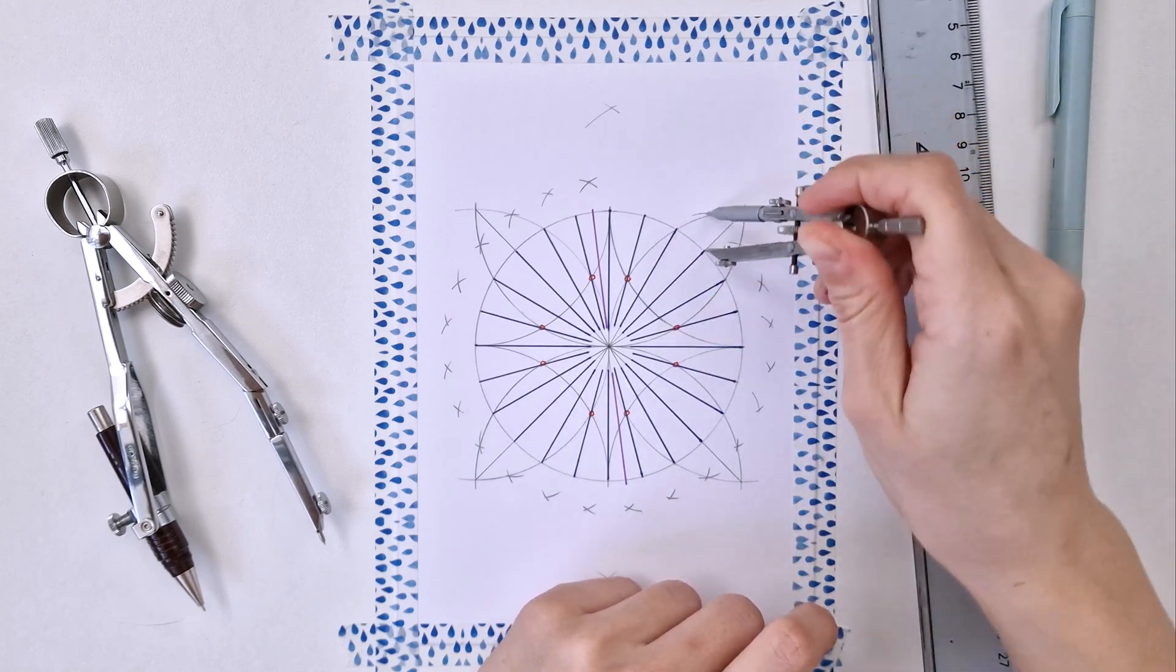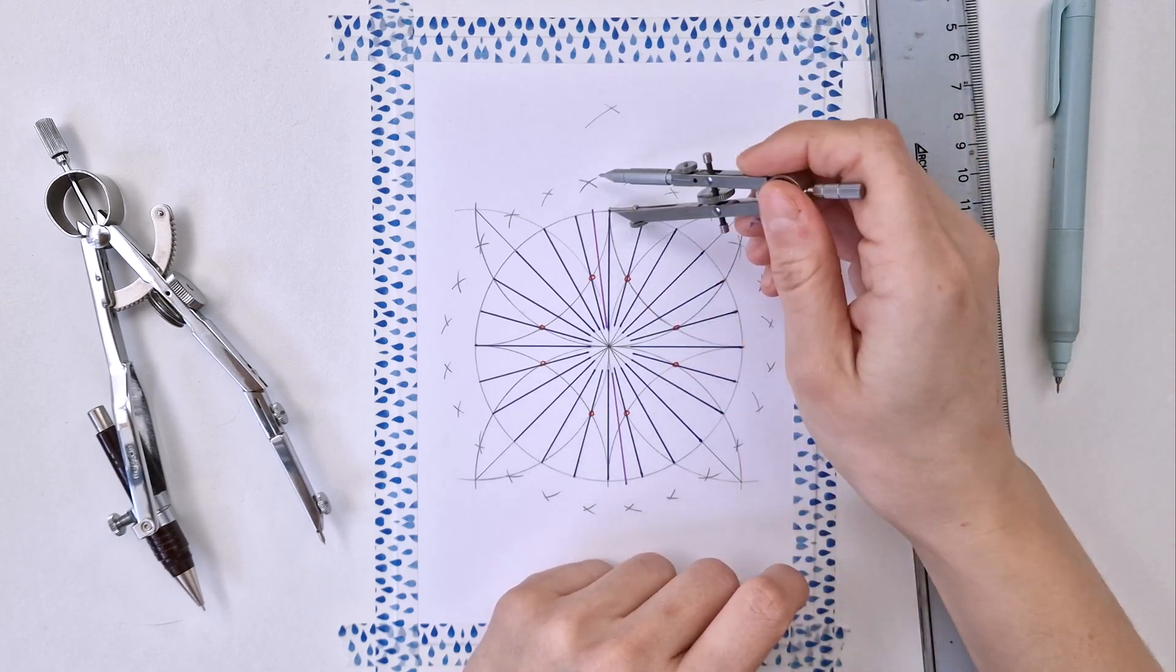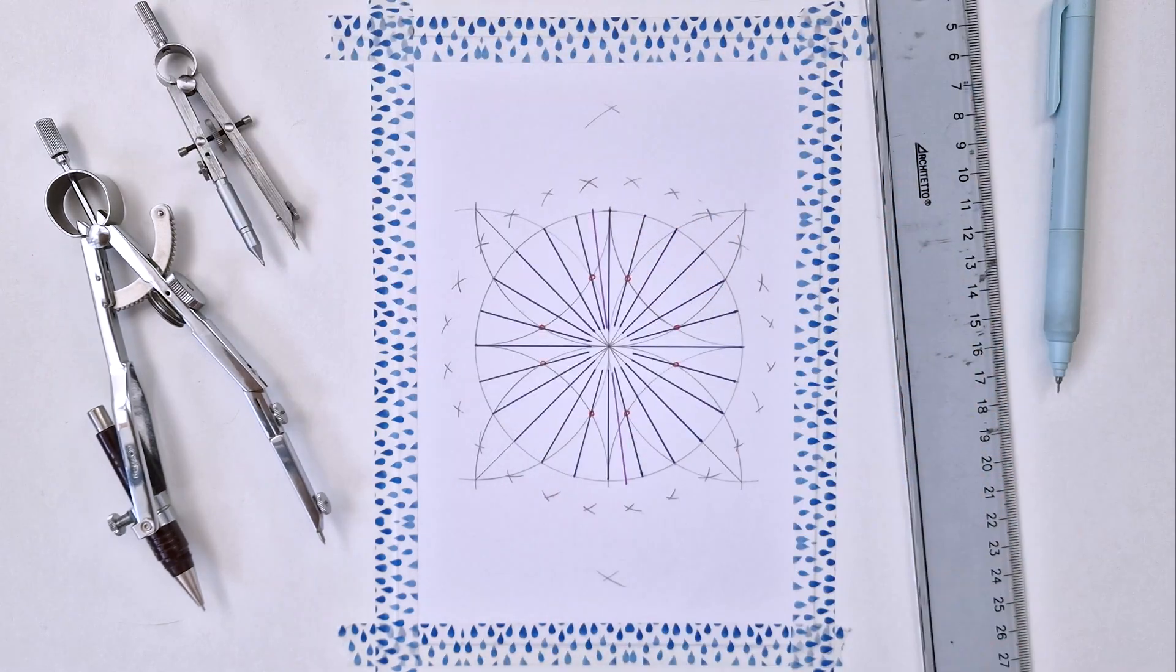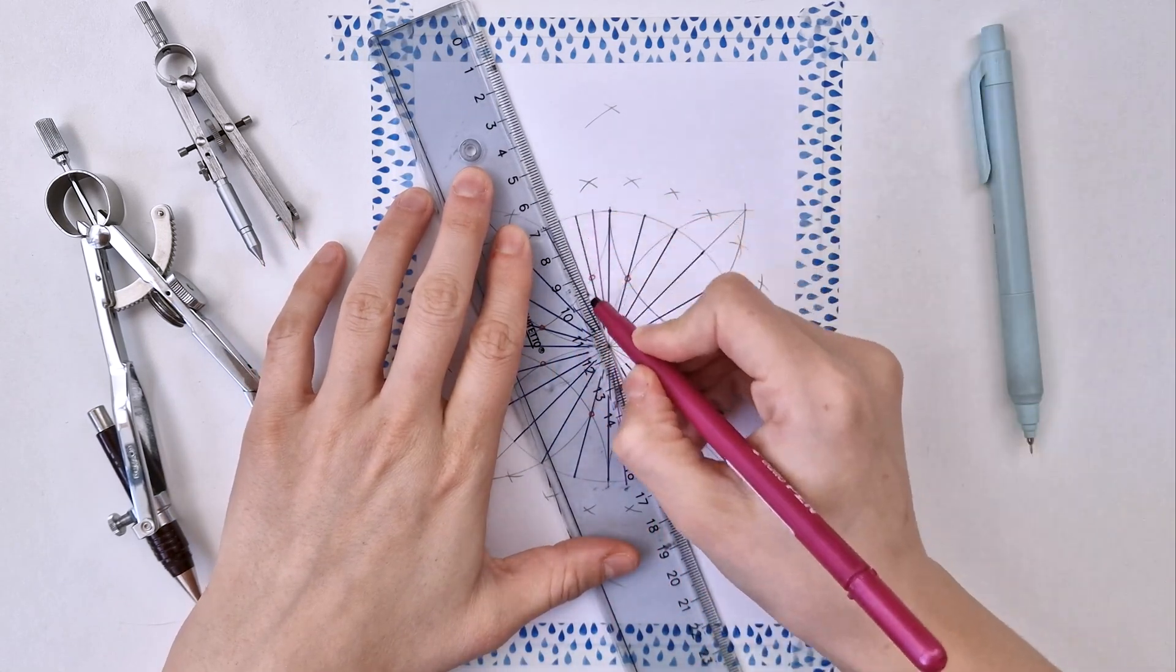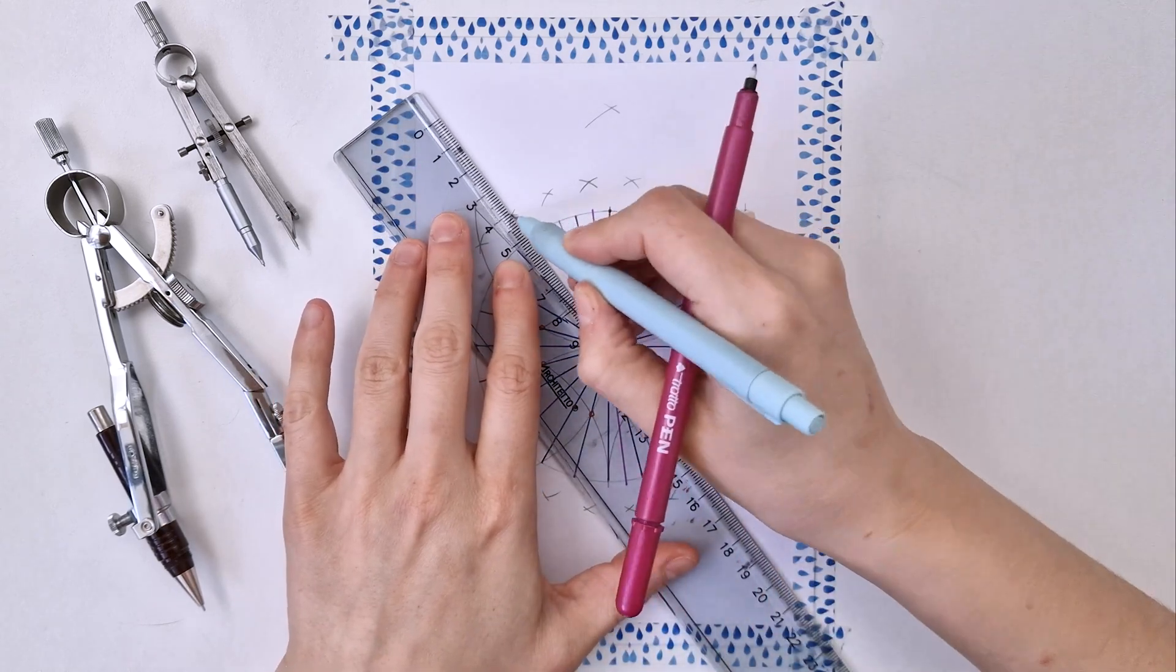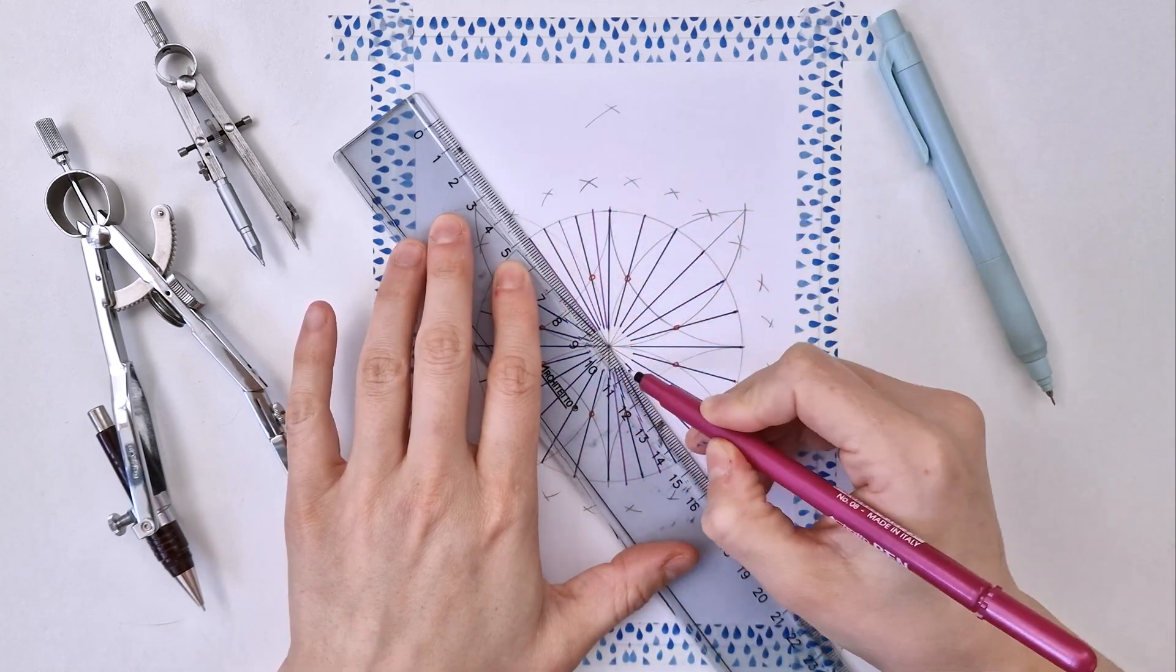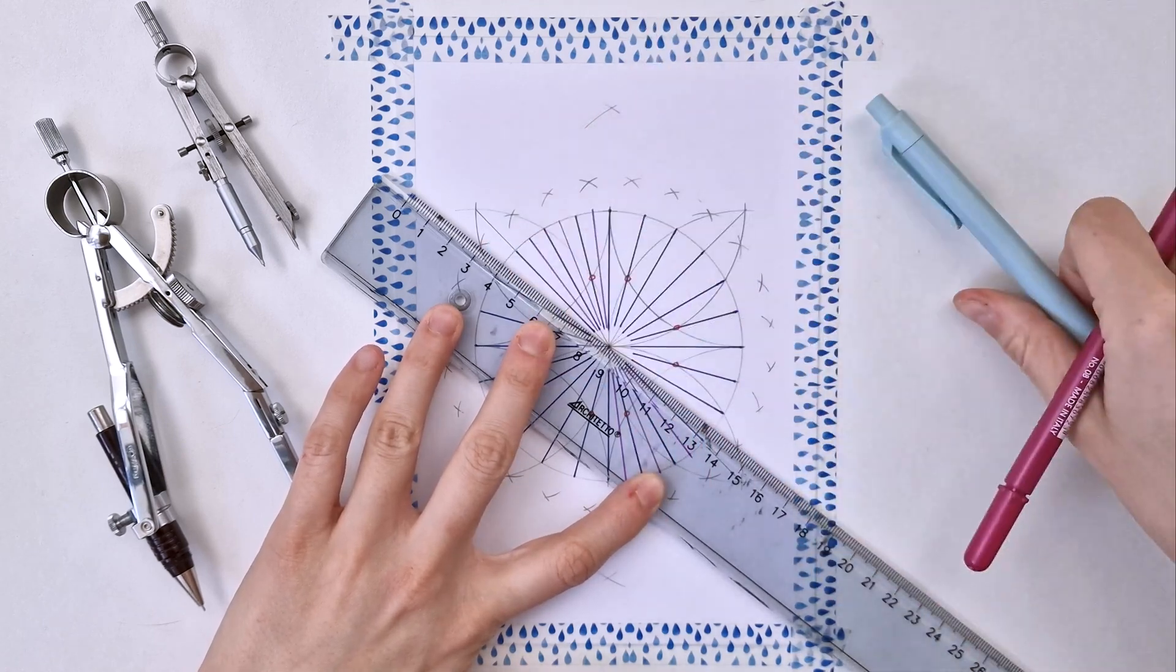96, which is 48 times 2. You have your 48-fold division, and then you just use this method to divide it into 96-fold. Oh my god, mathematics.